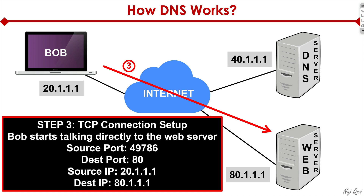Bob then forms a TCP connection — a three-way handshake — with the web server. The source port is a randomly generated port, and the destination port is port 80 for HTTP. The source IP is Bob's IP and the destination IP is cisco.com's IP, 80.1.1.1, which is a fictitious IP used for the purpose of this example.